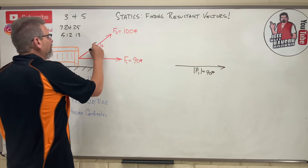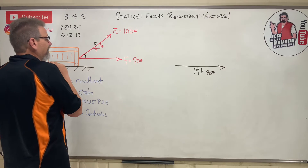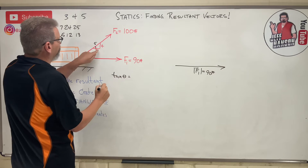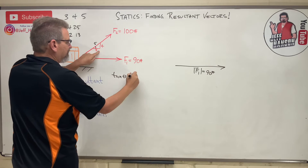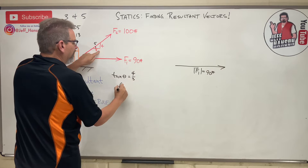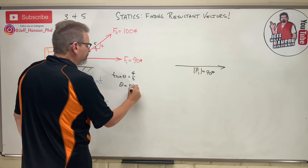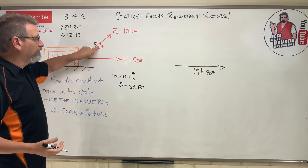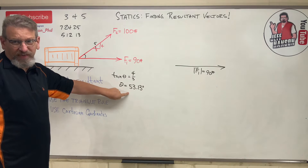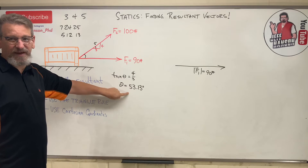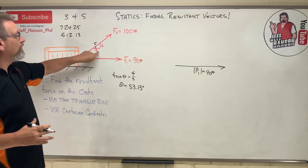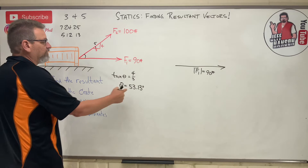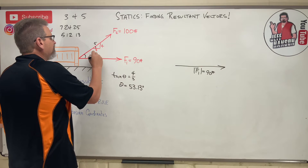If the slope triangle confuses you, just convert it to an angle. For this triangle: tan θ = opposite over adjacent = 4/3, so θ = 53.13 degrees. If it's easier to work with an angle rather than a slope triangle, just do that — you get the exact same answer. For this method I'll use 53.13 degrees.